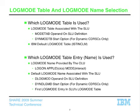The IBM default log mode table is called IST-INCLM. We ship that with every release of VTAM. If we can't find a log mode table associated with the secondary LU — if one hasn't been specified, or it's a dynamic LU without the start option coded — then we always use IBM's default log mode table.